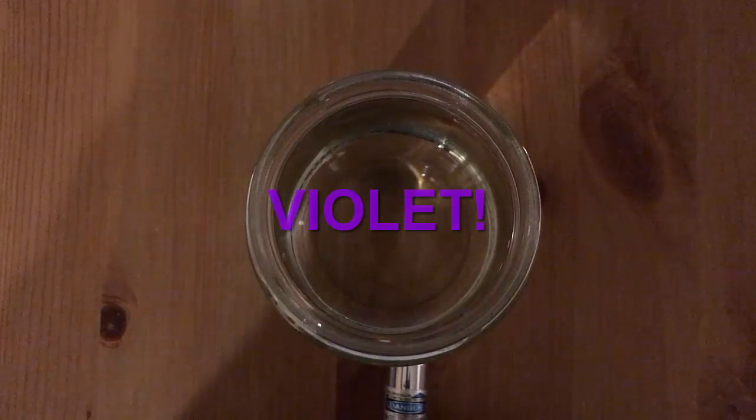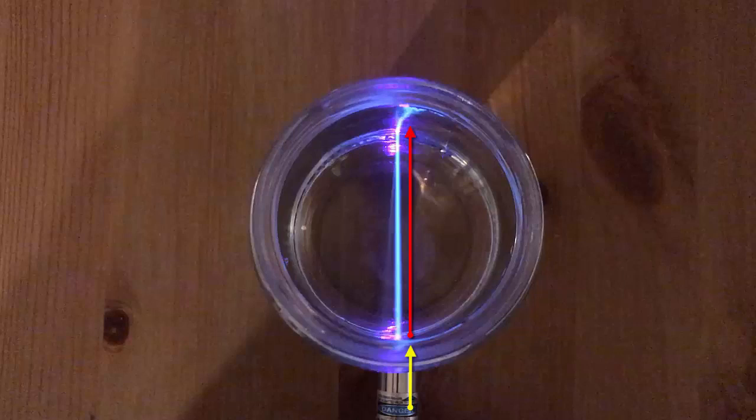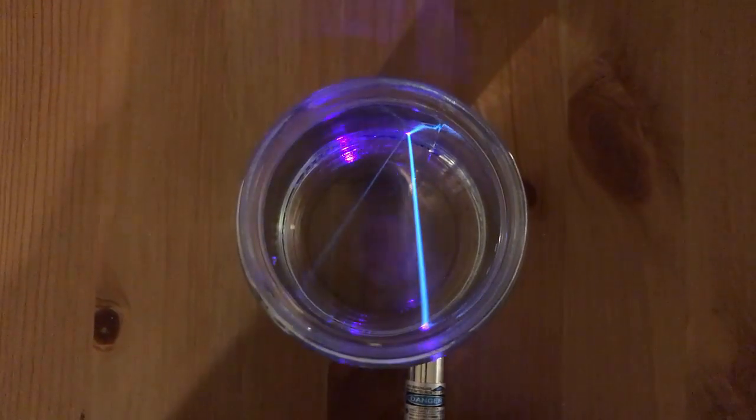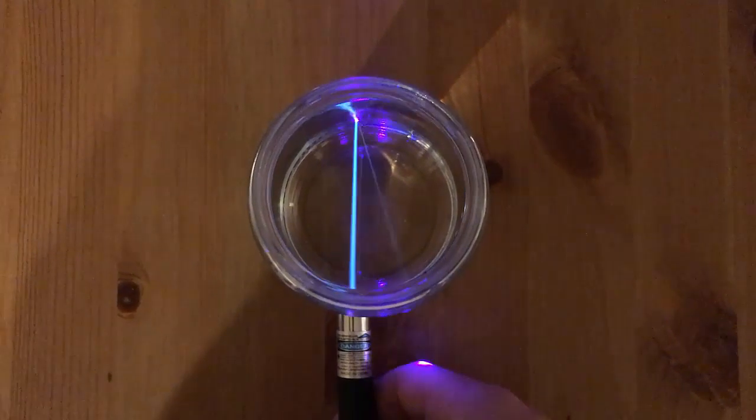Here I've got the purple laser and we're going to take a look at refraction through water. As I shine it through, it goes straight through the water, but if I shine it at an angle and move the laser over, as the laser moves through the water it changes its direction.